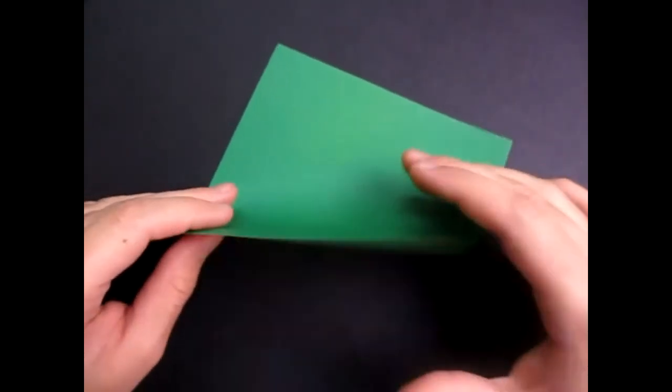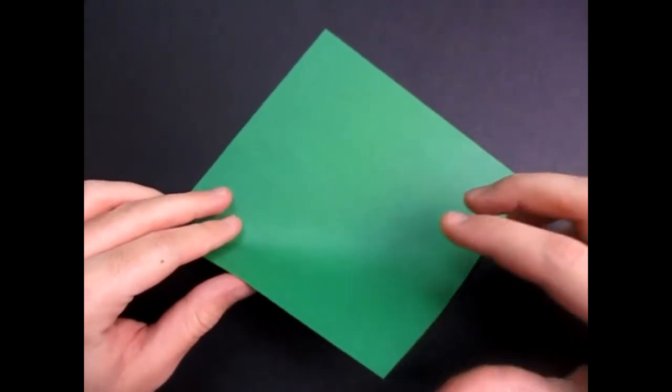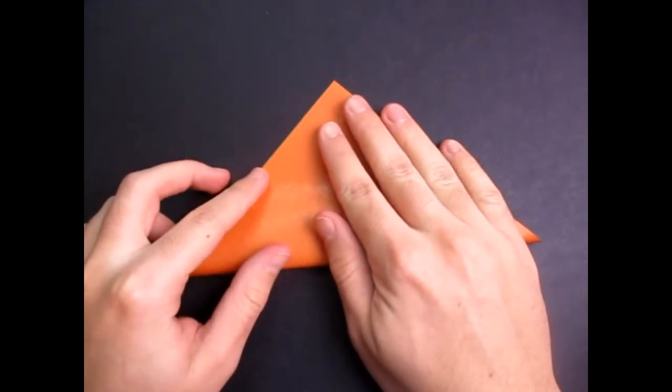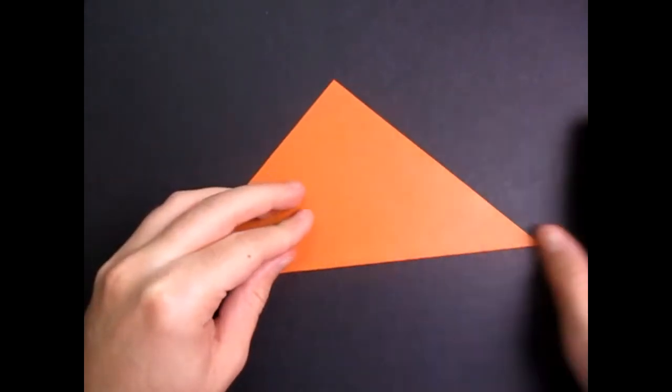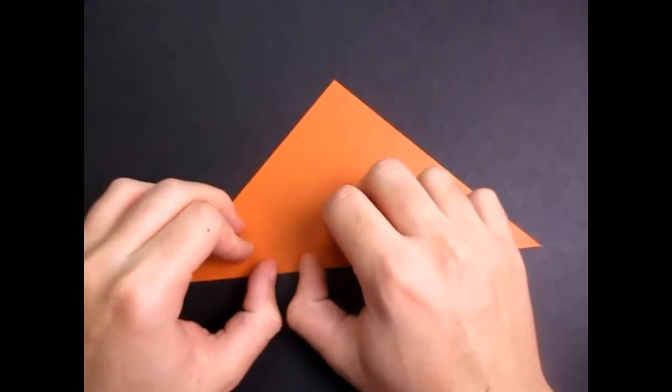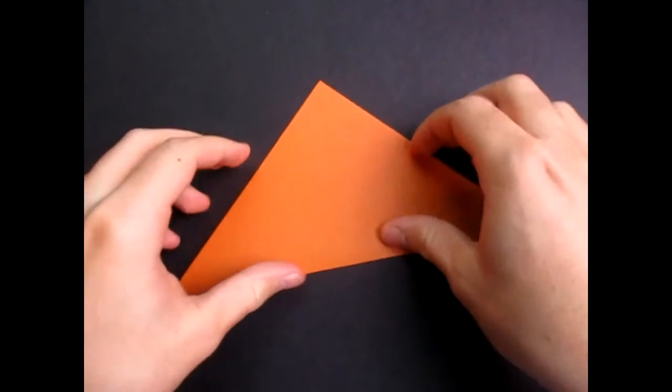Okay, so let's begin bowtie side up and let's fold in half. Try to make very precise folds and crease sharply.